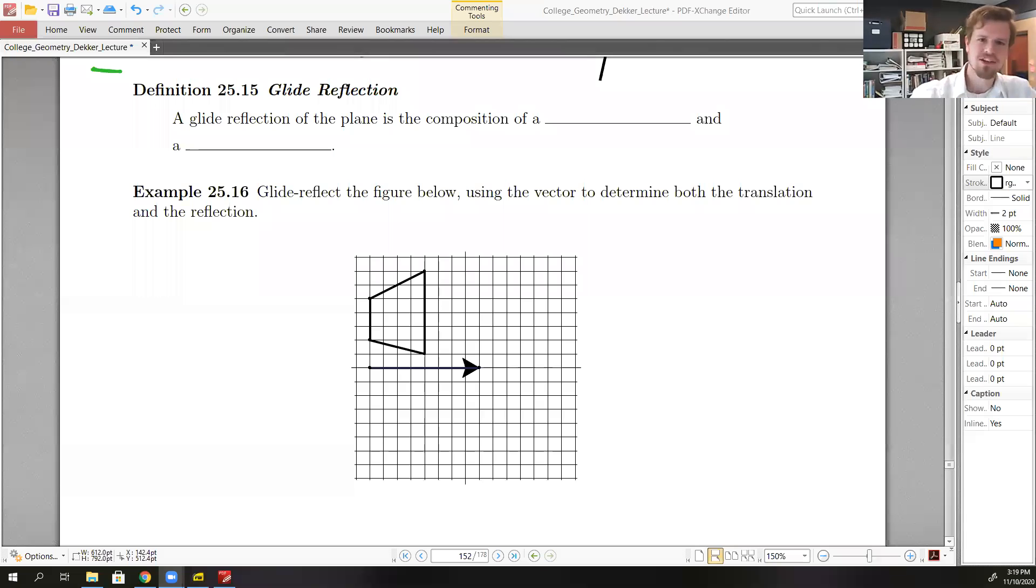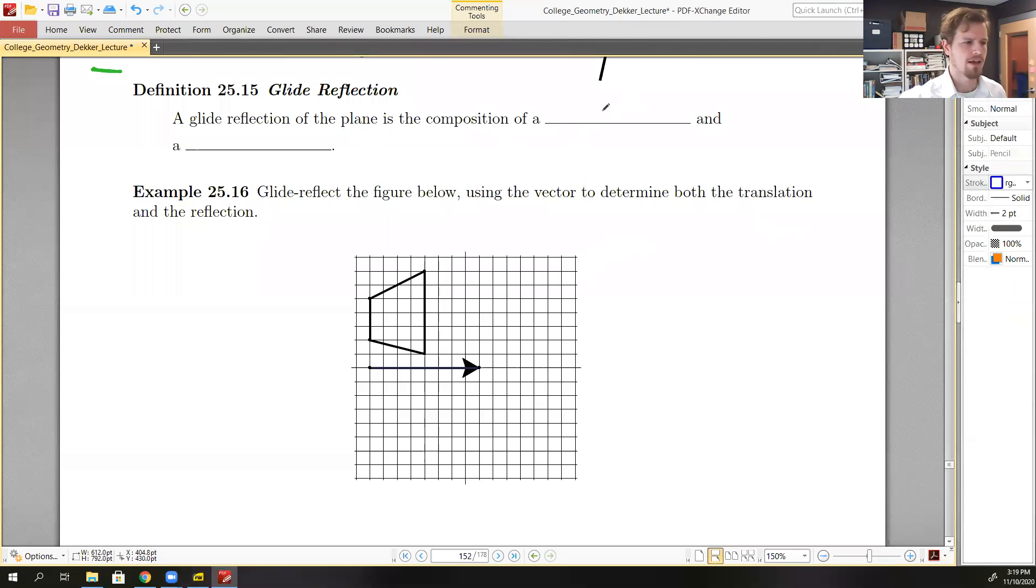Alright, so a glide reflection is simply the composition of or the combining of a reflection and a glide. Well, what's a glide? Well, that's just a translation. So it is the composition of a reflection and a translation.